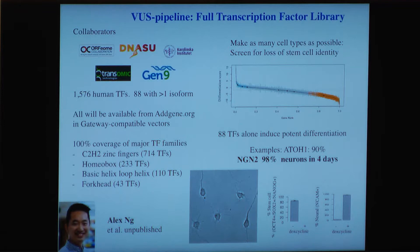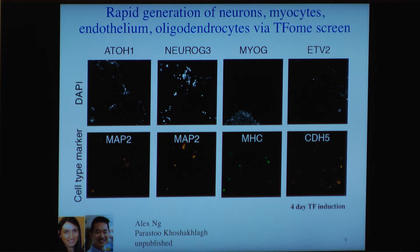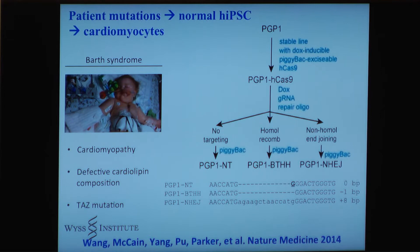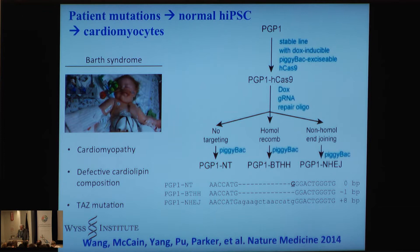There is a full transcription factor library for all human transcription factor genes, including multiple alternative splice forms, so you can determine causality. We've used it for making almost any cell type we've set our mind to — I don't know of a failure since we finished this full library. It will be distributed through Addgene, as many of our other GP-Write tools have been. Here are some of the cell types developed: neurons, musculature, endothelial blood vessels, oligodendrocytes, and glia.